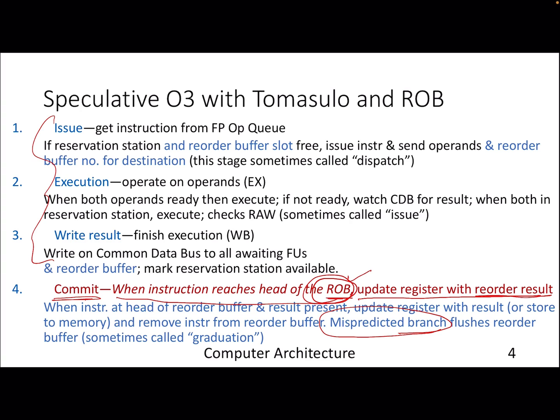If you predicted a branch that was actually wrong, the moment it reaches the head of the ROB you flush all the instructions that followed it, because those were wrong-path instructions. Similarly, for a store instruction from the memory perspective, you actually write into the store queue when the instruction reaches the head of the ROB.